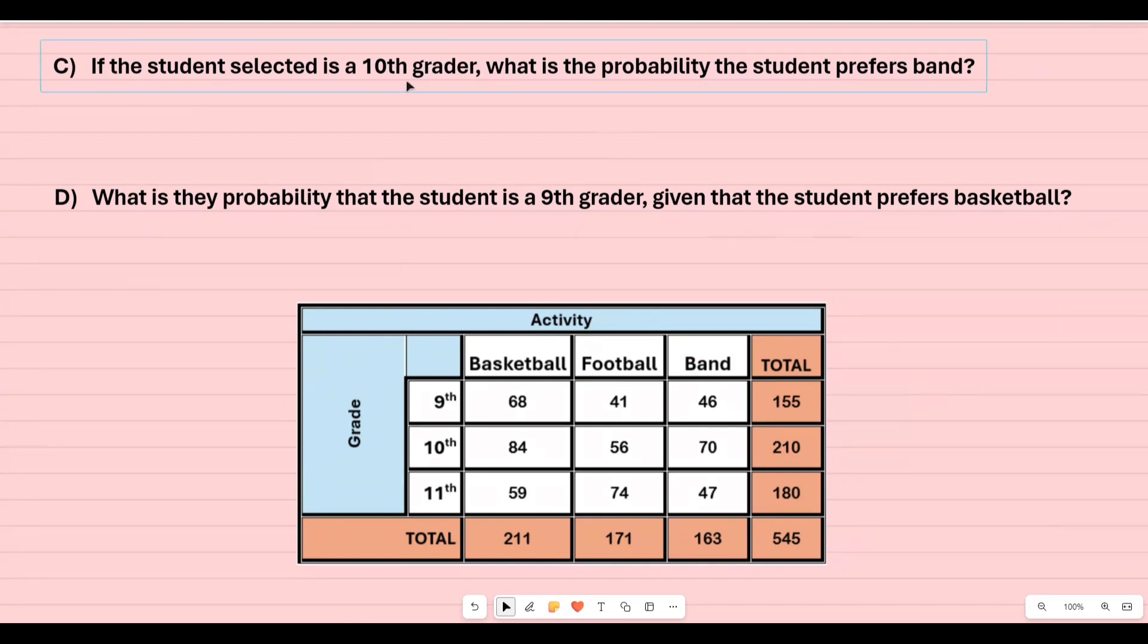If the student selected is a tenth grader, so I know that's going to be in my denominator. What is the probability the student prefers band? I'm not looking at the whole school this time. I'm only looking at the tenth graders. So I'm going to go to my row for tenth graders. This is what's going to be in my denominator.